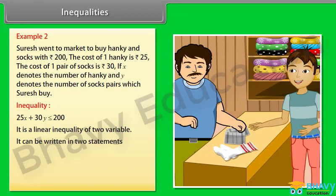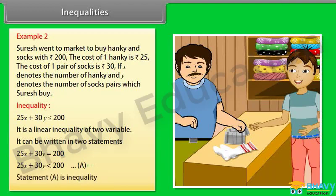It can be written in two statements: 25x plus 30y is equal to 200, and 25x plus 30y less than 200. Statement A is an equality in this case.